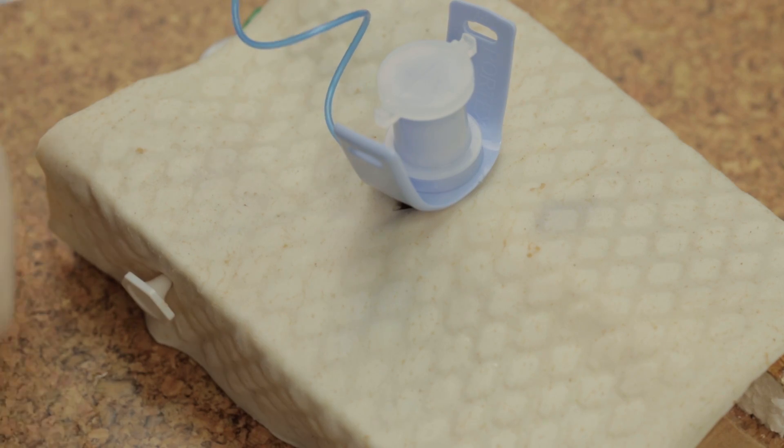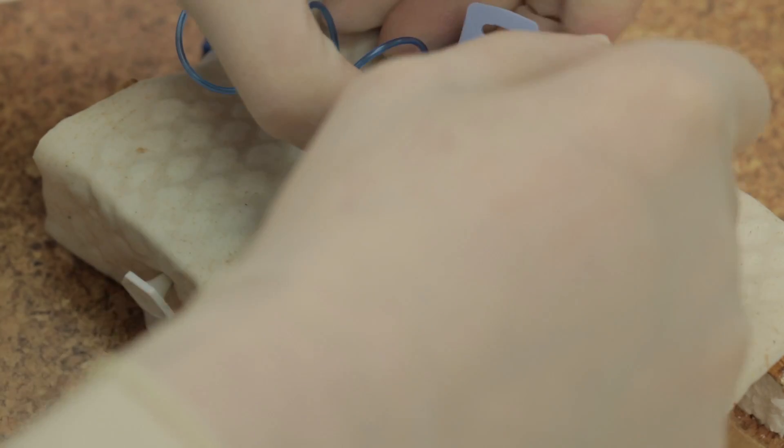Remove the stylet. The tracheostomy tube can then be secured in place.